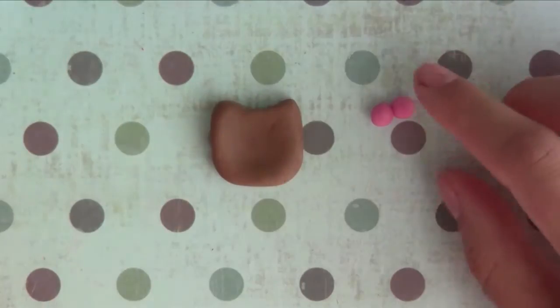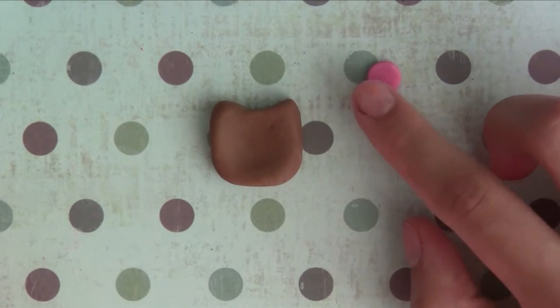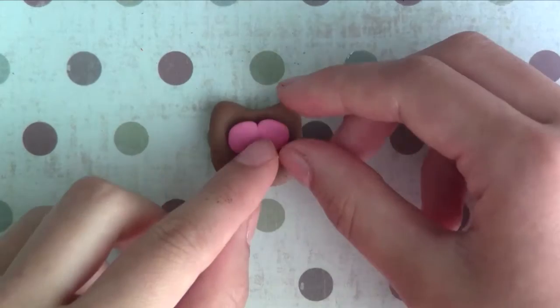Now I'm taking two circles and flattening it together to form the eyepiece of the owl.